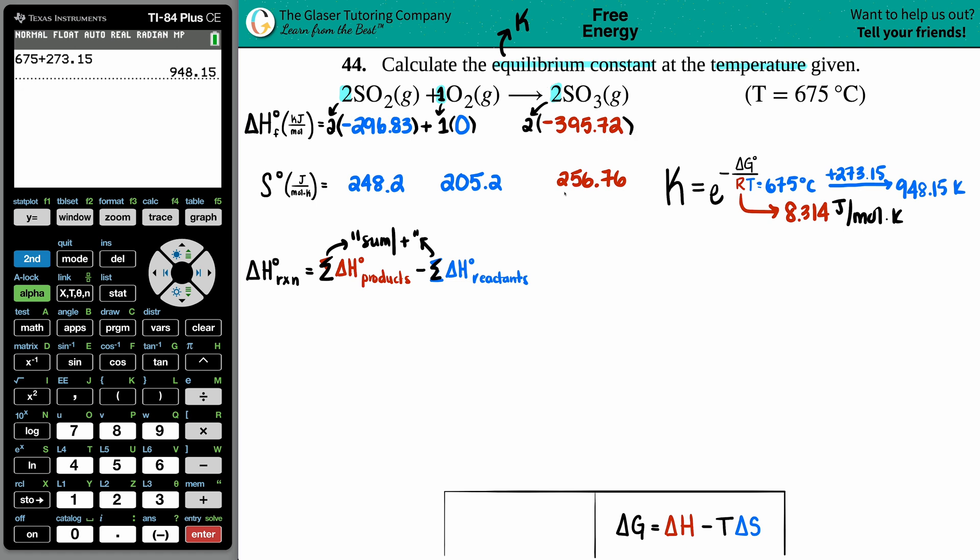Let's figure it out for the reactants: 2 times -296.83 gives -593.66. For the products: 2 times -395.72 gives -791.44. We have the total for the reactants and the total for the products, so now we can plug it in.